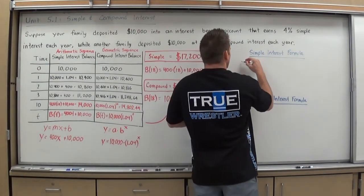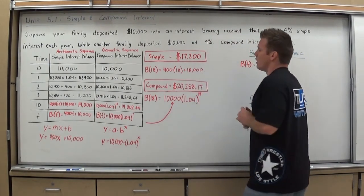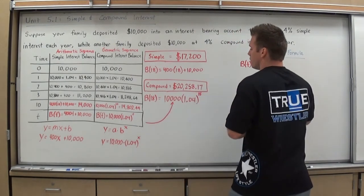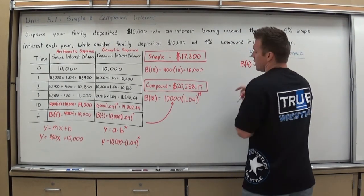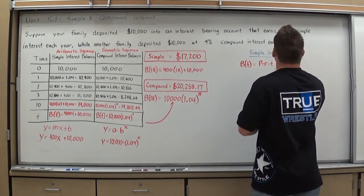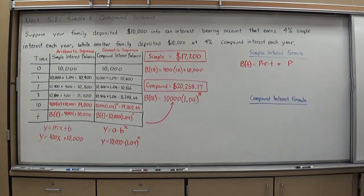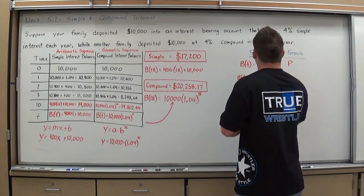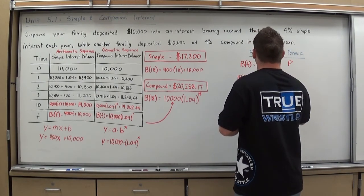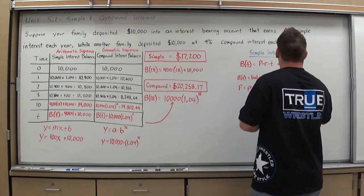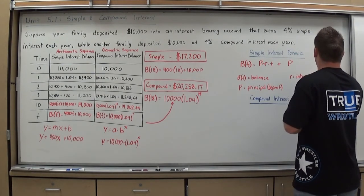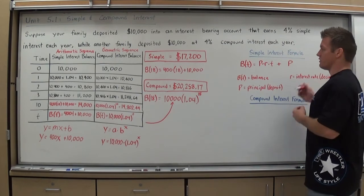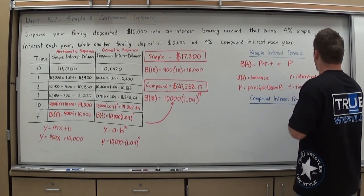So formula-wise, what does that mean? Our simple interest would be B(t) equals 400T, which was basically our interest rate times our principal. So let's go principal times rate, and the T was time. So principal times rate times time, plus our original principal. So that would be a basic simple interest format. B(t) represents balance. P is our principal. R is our interest rate, and that has to be converted to a decimal. You never plug an interest rate in as a full percent. I wouldn't plug it in as 5 percent, I plug it in as .05. And T is your time in years.